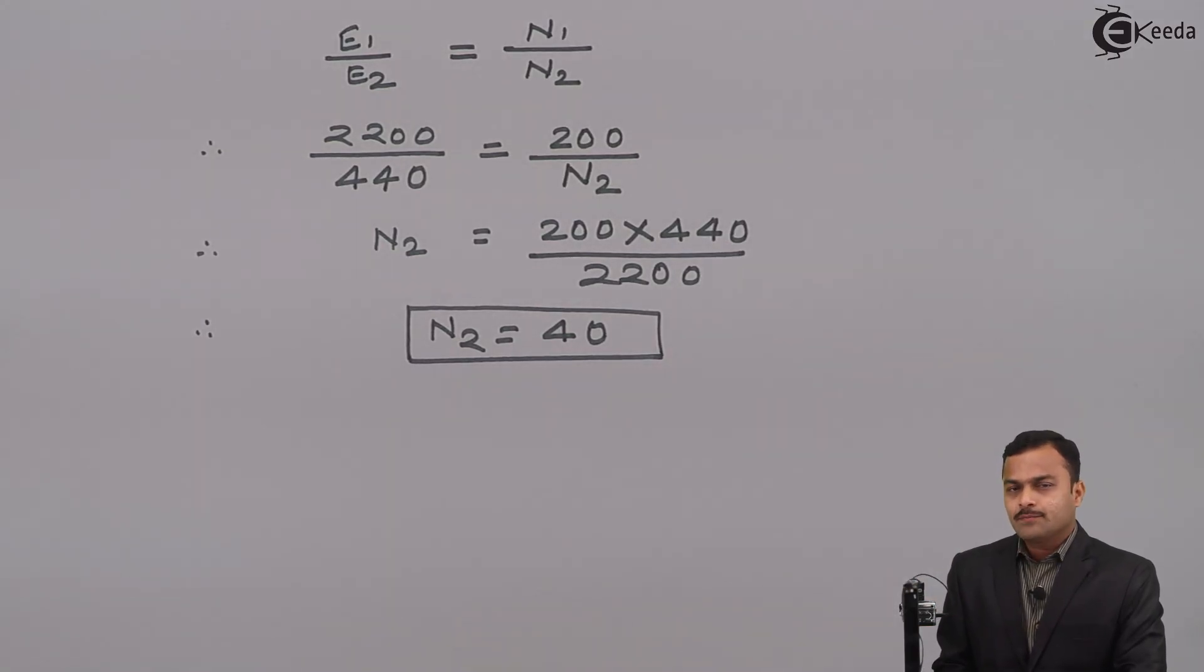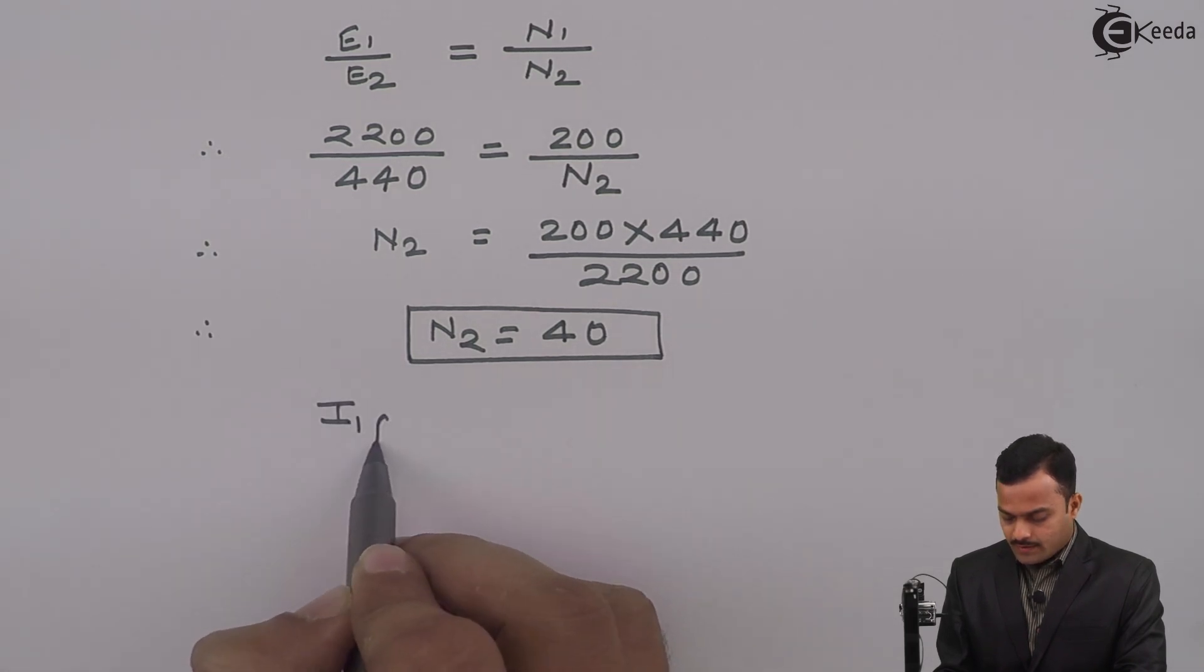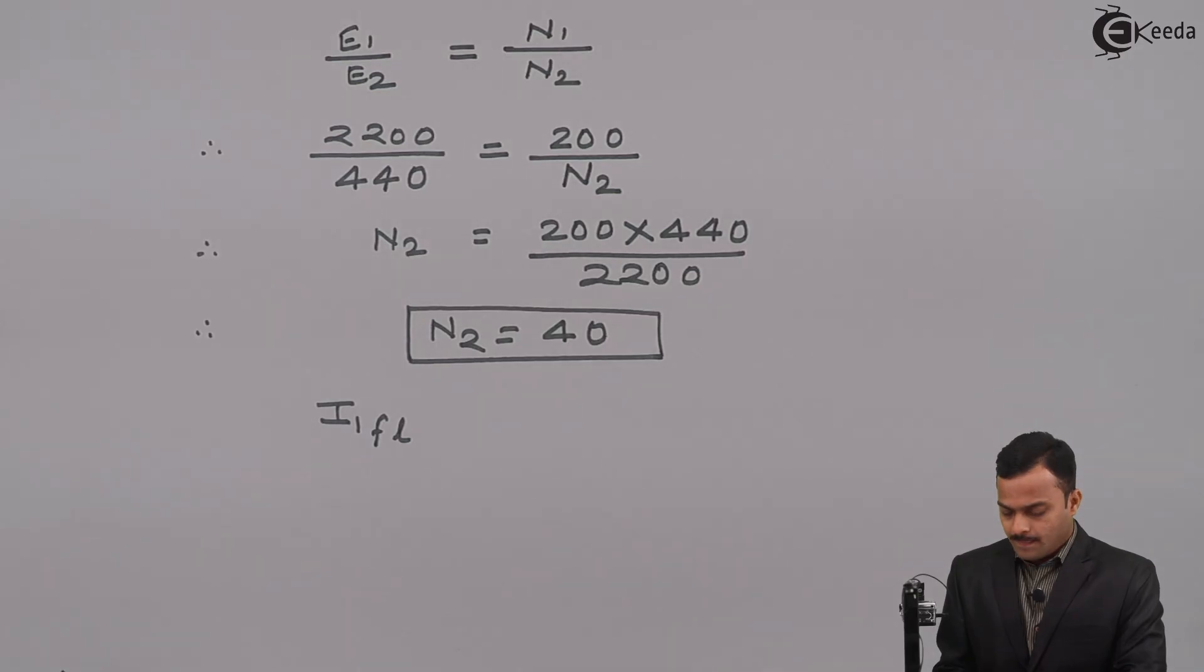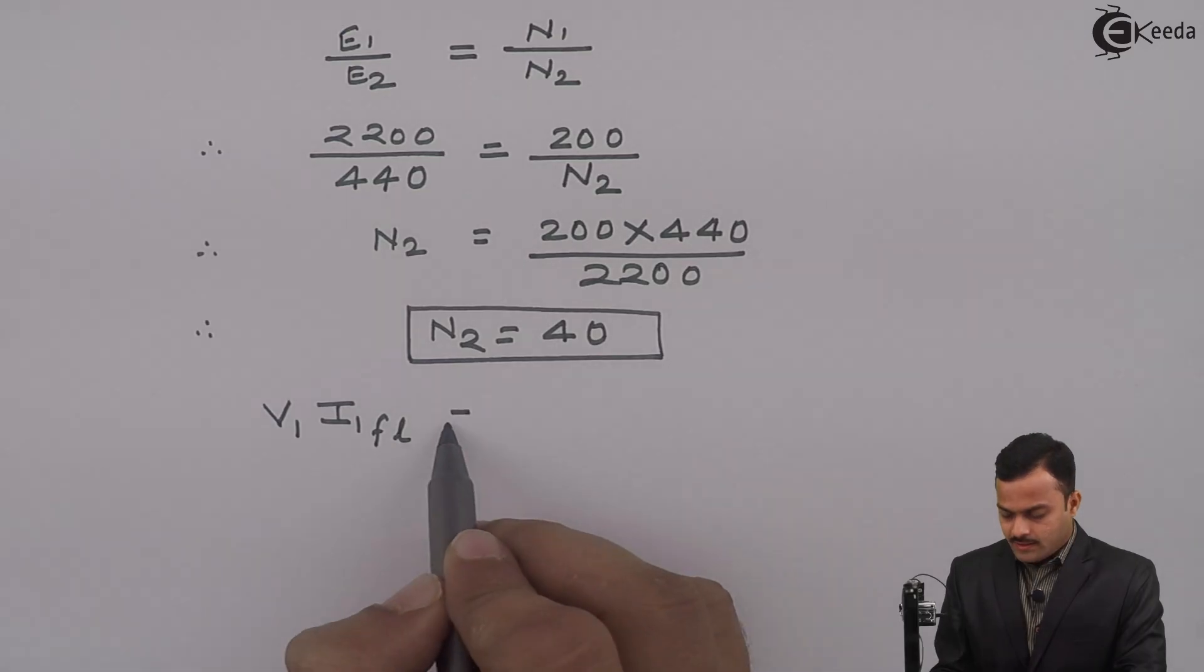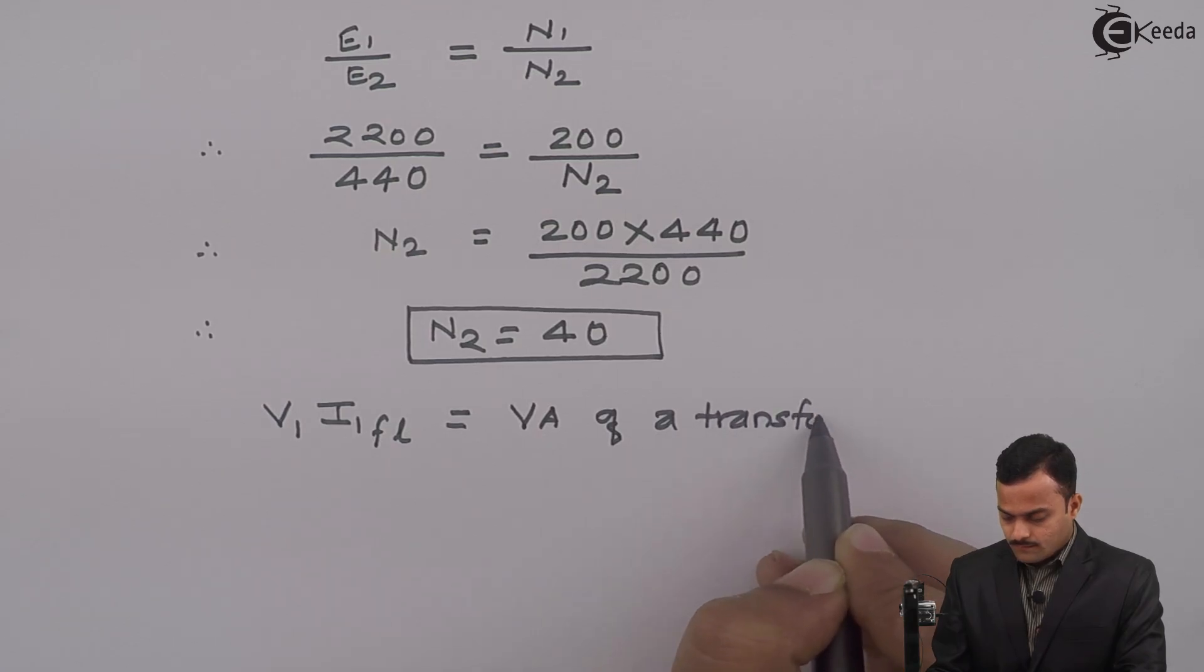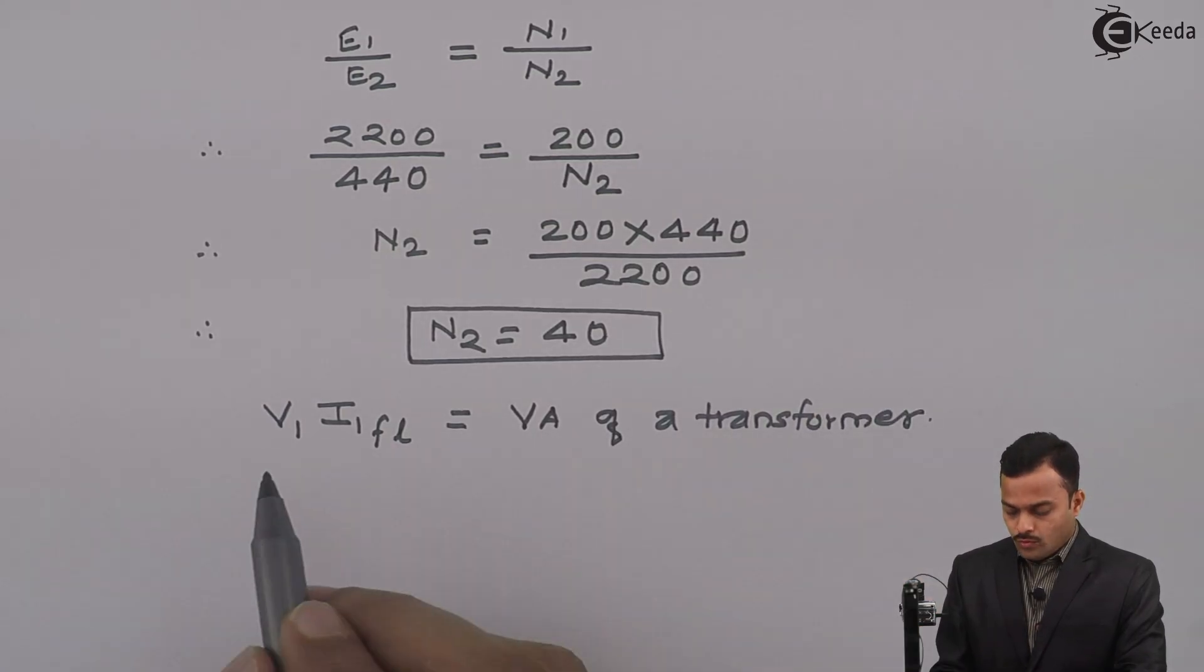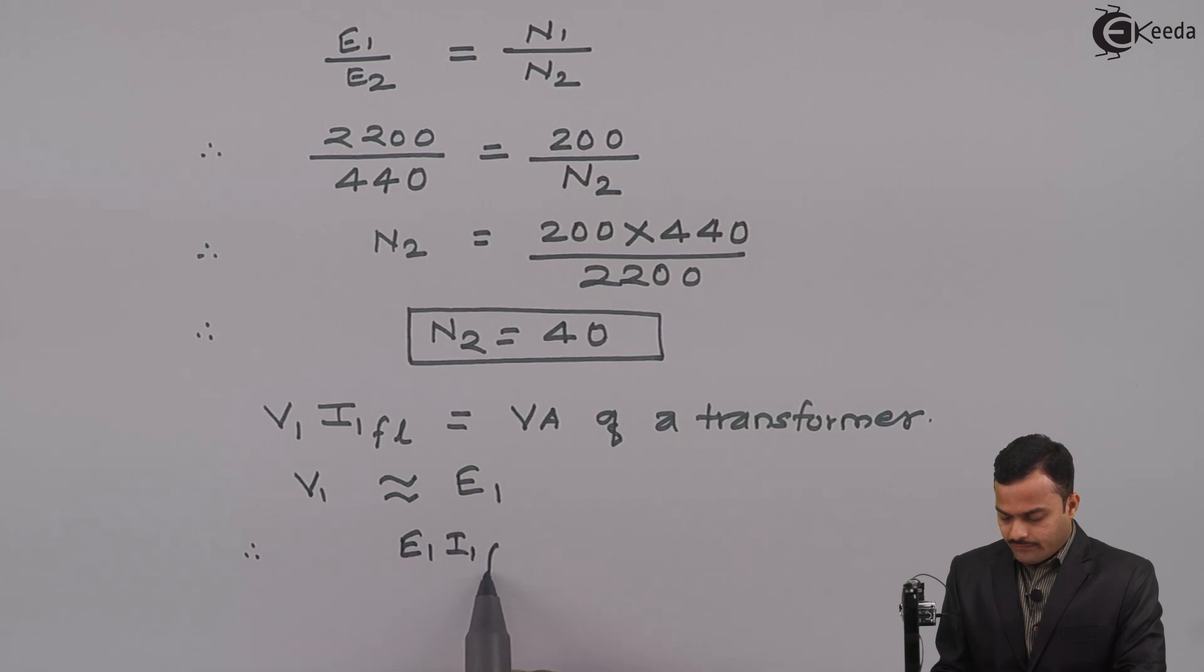Let's calculate rated primary current. Rated primary current is I₁FL, also called full load current. If I multiply this with primary side voltage, I will get volt-ampere of a transformer. V₁ is approximately same as E₁ if we're neglecting primary side resistance and leakage reactance. So E₁ × I₁FL equals transformer VA.